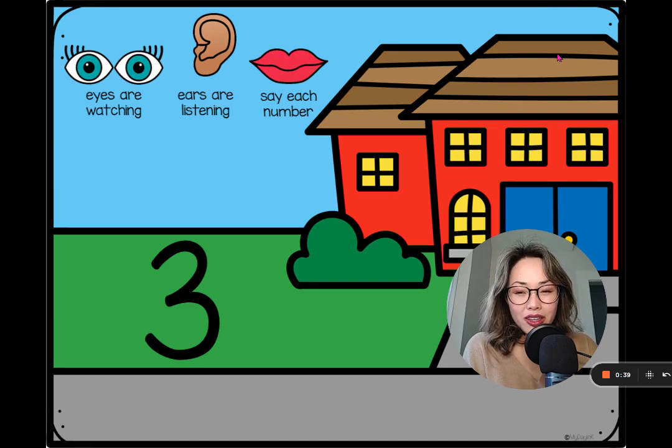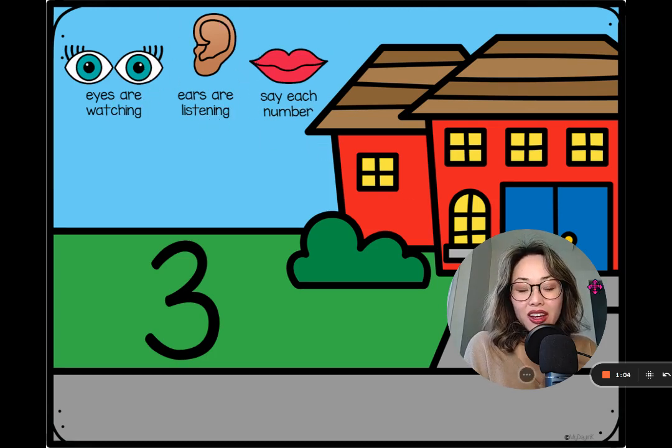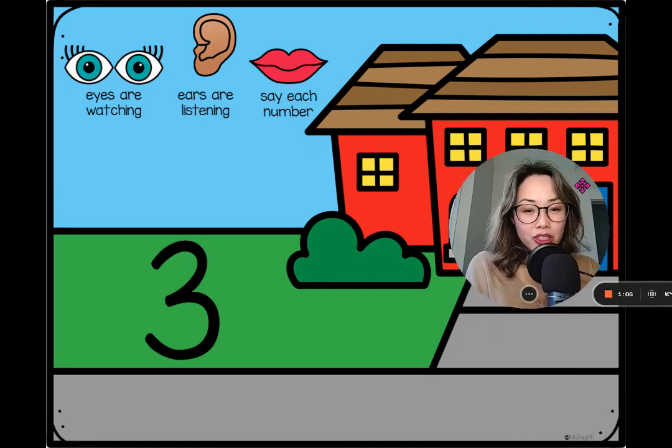So this math activity uses flashcards one through ten and the learning targets are one, I can identify numbers one through ten, and two, I can represent numbers one through ten showing them on my fingers. Before we get started, I'd love to go over expectations at the beginning of every activity and I'll have the students say these expectations with me while also pointing to these body parts.